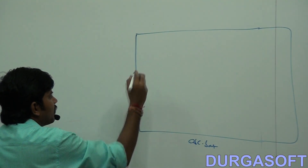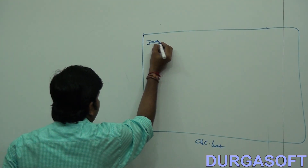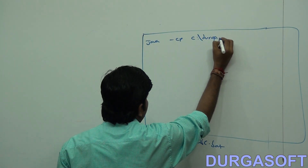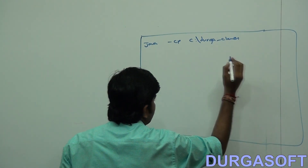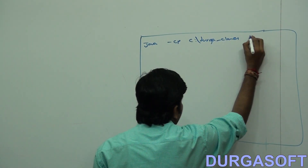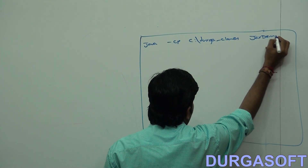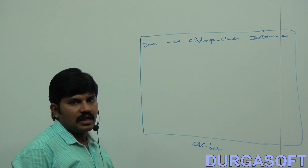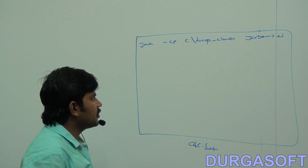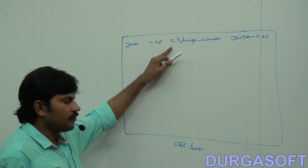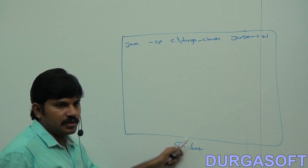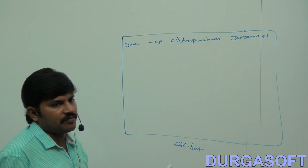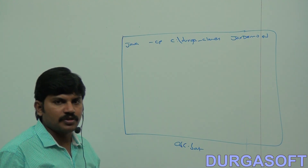Now, how many commands am I taking? Only one command: 'java -cp C:\DurgaClasses JarDemo'. If I double-click this batch file, automatically this command will be executed and my Java program will run.